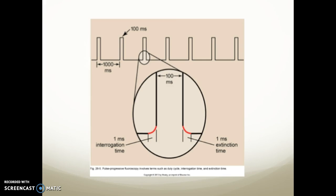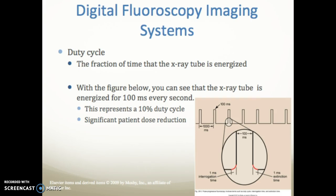This gives you an idea: the entire cycle is 100 milliseconds, with about one millisecond integration time and one millisecond extinction time. The duty cycle is the fraction of time the x-ray tube is energized. With the figure shown, the x-ray tube is energized for 100 milliseconds every second, representing a 10% duty cycle — really important for reducing patient dose.